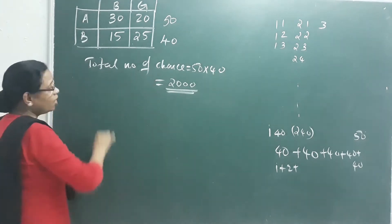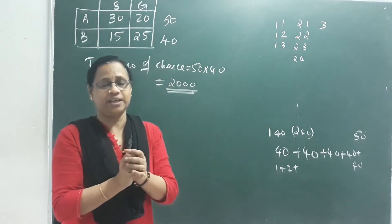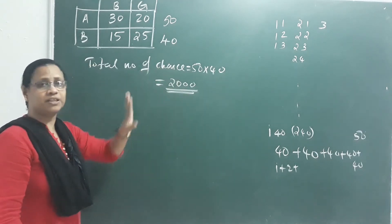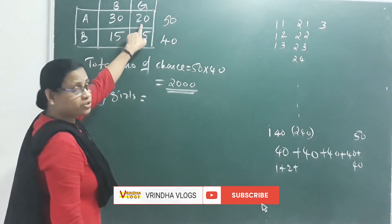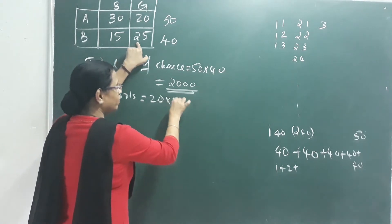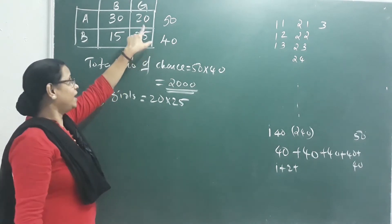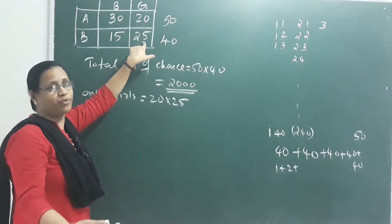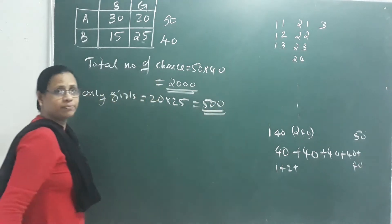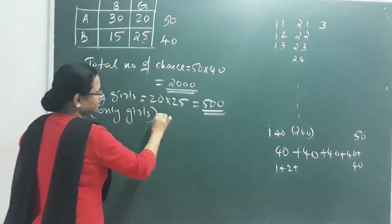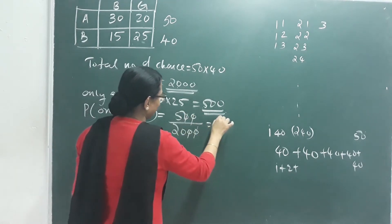Now, only girls: in class 10A there are 20 girls, and in class 10B there are 25 girls. So the favorable outcomes are 20 into 25, which equals 500. Probability of only girls equals 500 divided by 2000. Simplified, that is 1 by 4. So the chance of selecting girls from both classes is 1/4.